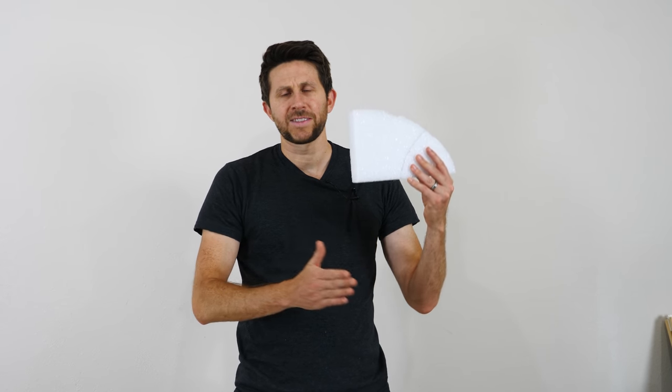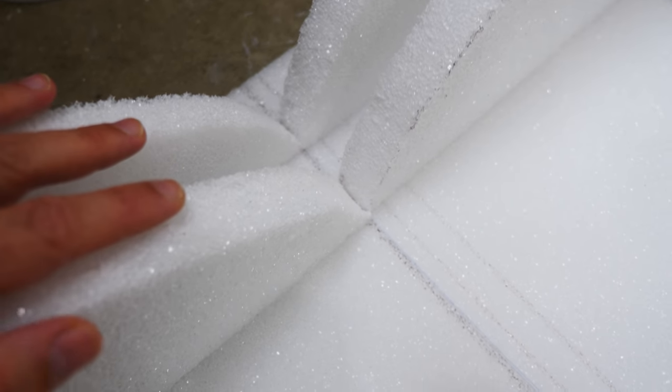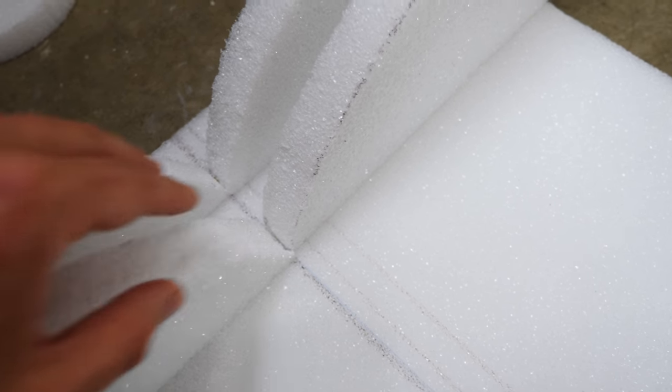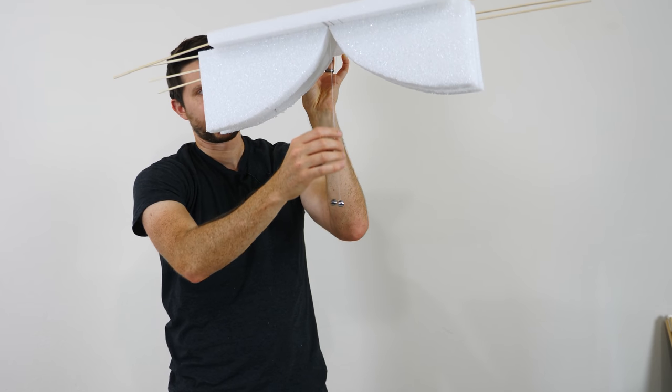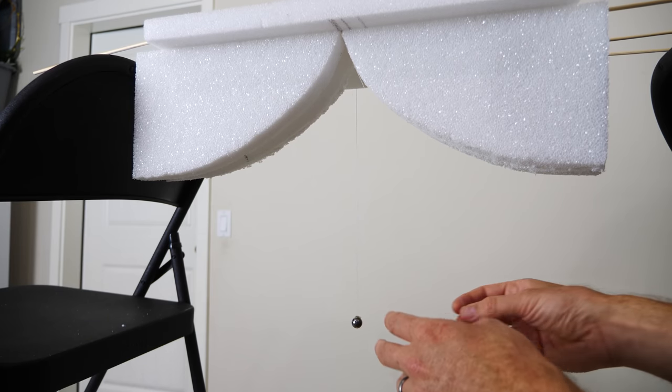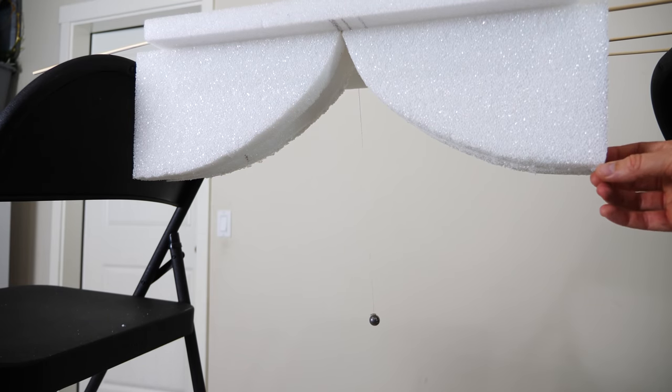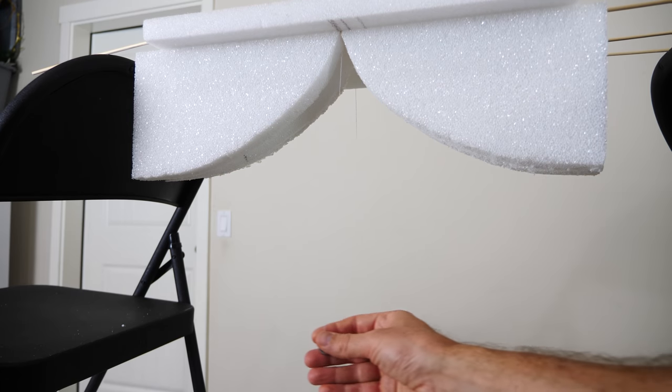So now let's glue these half cycloids onto our pendulums on either side so that the center is right in the middle here. So this is what the finished product looks like. So now with these on it, you can see when I pull it back like this, the string follows the curve.